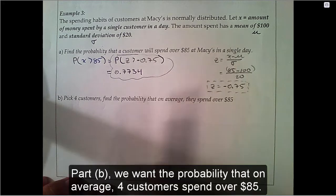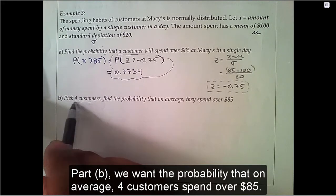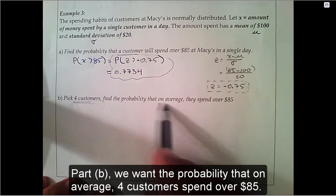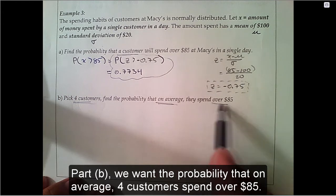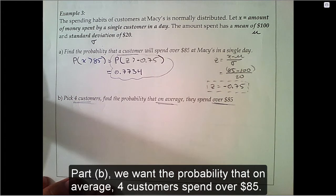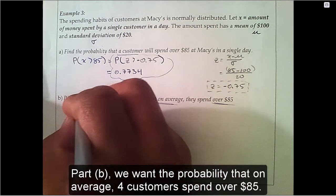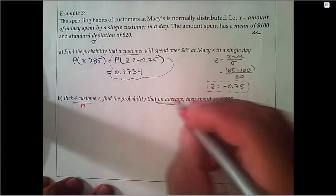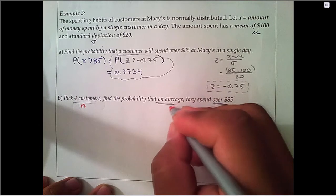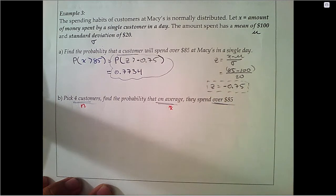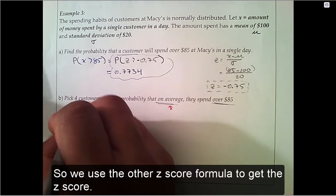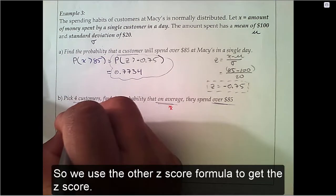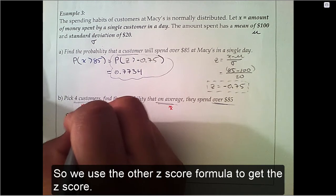Part B: we want the probability that on average four customers spend over $85. So, we use the other z-score formula to get the z-score.